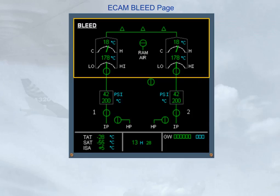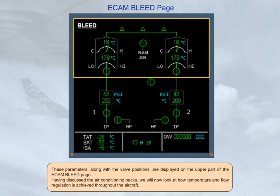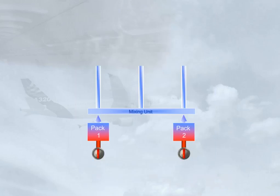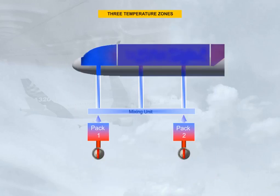Having discussed the air conditioning packs, we will now look at how temperature and flow regulation is achieved throughout the aircraft. The three outputs from the mixing unit feed three separate aircraft zones: cockpit, forward cabin, and aft cabin.